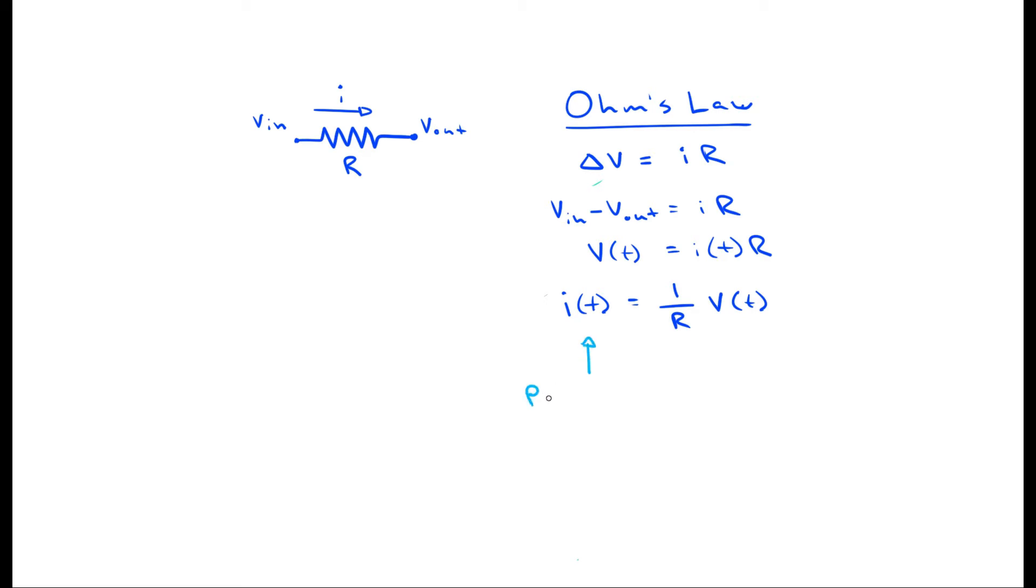What we observe here is that the present output, the current at time t, is only a function of the present input applied, which is the voltage at time t. In other words, no previously applied voltage has any effect on the present output. For this reason, we consider this to be a static system.